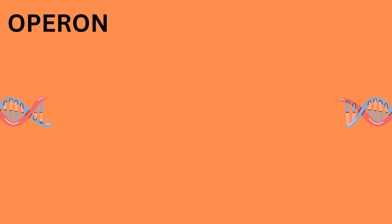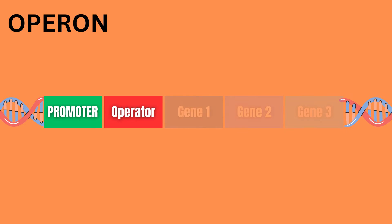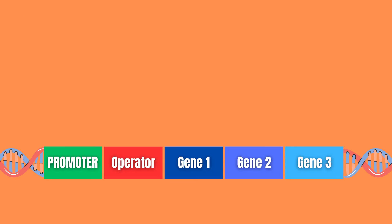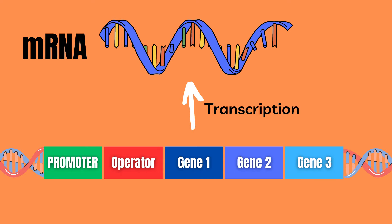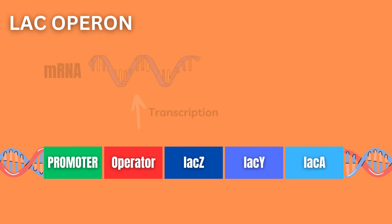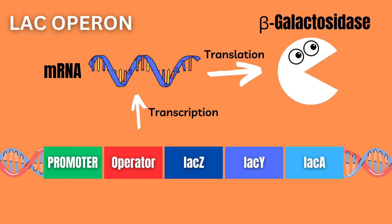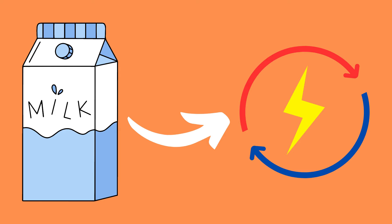An operon consists of a promoter, an operator, and a group of genes that are transcribed as a single mRNA. The genes in the lac operon encode beta-galactosidase, which breaks down lactose, allowing E. coli to use lactose as an energy source.